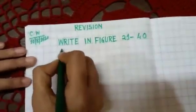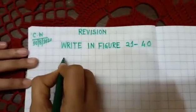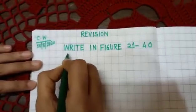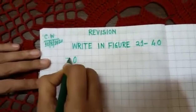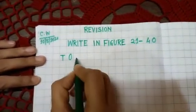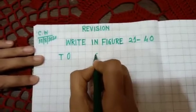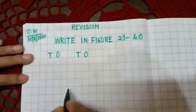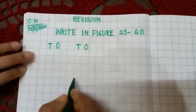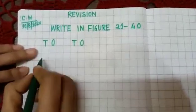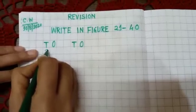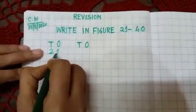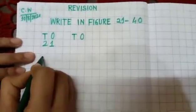Now again you leave here one box and write here ones, tens. Again leave here two boxes and write here ones, tens.